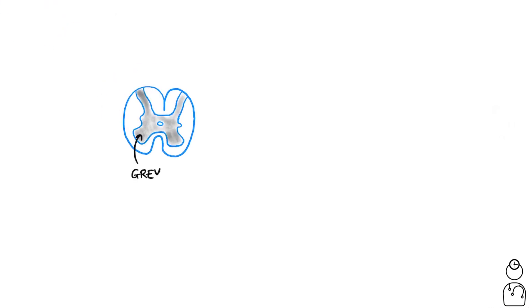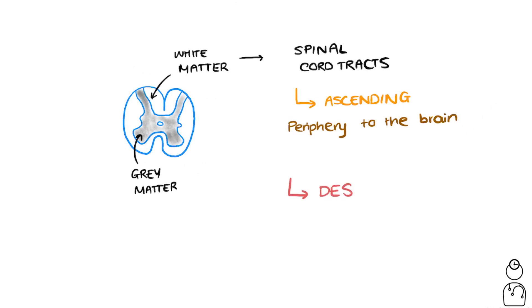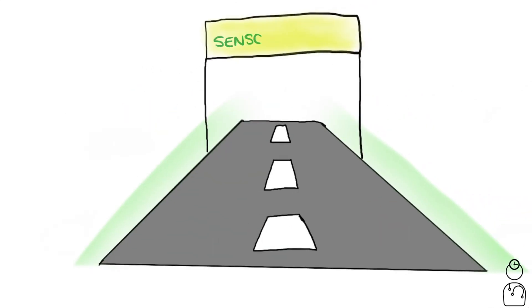So we've talked about how the grey matter is on the inside and the white matter is around the outside of the spinal cord, and we know the spinal cord tracts are located in the white matter. There are two major groups of spinal cord tracts: ascending tracts go from the periphery to the brain, and the descending tracts go from the brain out to the periphery. You can think of these tracts like highways through which sensory or motor information travels.